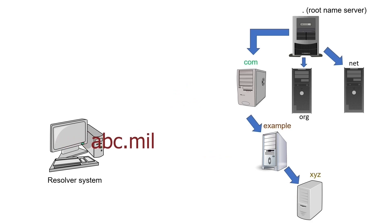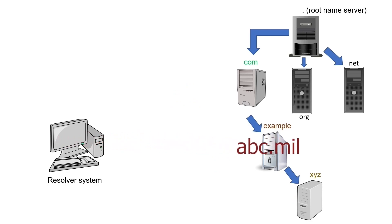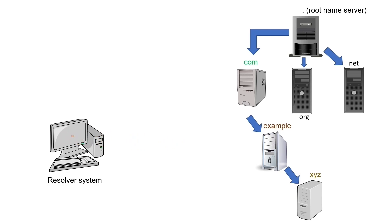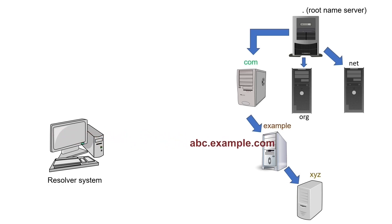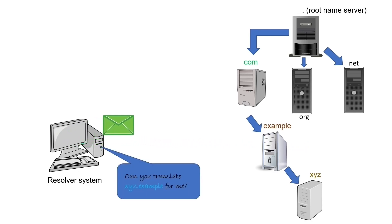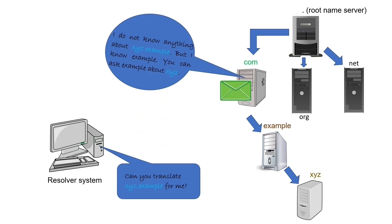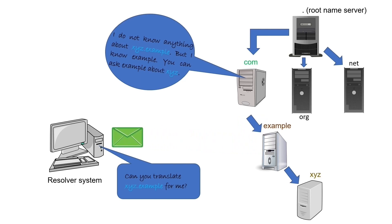When an authoritative name server receives a query, it checks whether the query belongs to it or its child domain. If the query does not belong to it or its child, it returns an error indicating the requested host or service is not available. If the query belongs to it, it resolves the query. If the query belongs to its child domain, it provides a referral to the child domain's name server.